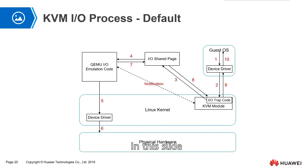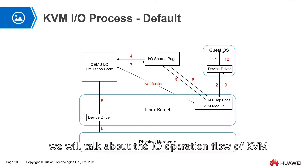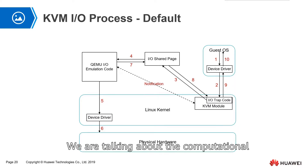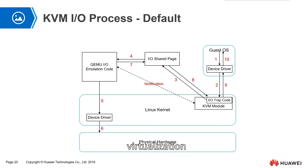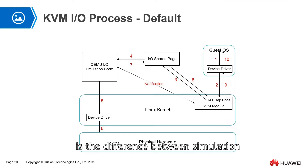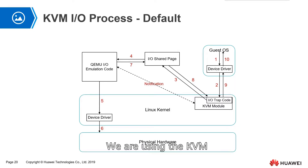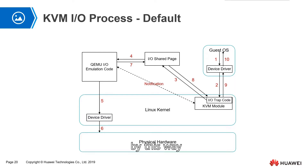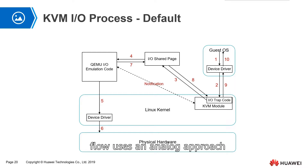In this slide, we will talk about the IO operation flow of KVM. We are talking about computational virtualization. The key problem in IO virtualization is the difference between simulation and para-virtualization. By default, KVM's IO operation flow uses an analog approach to IO virtualization.